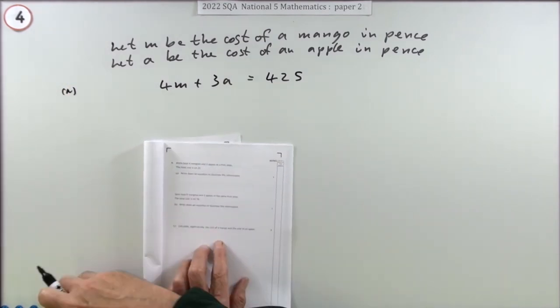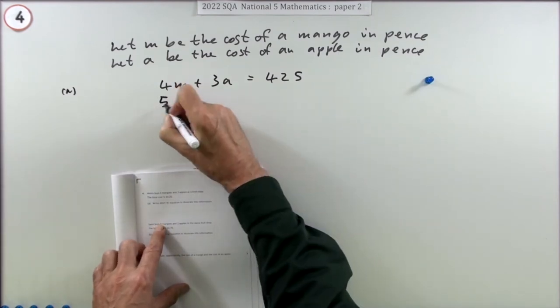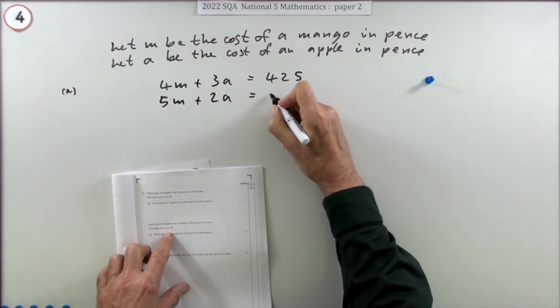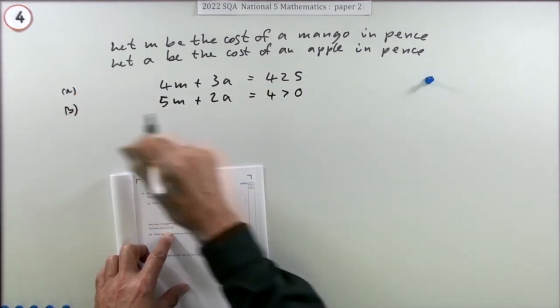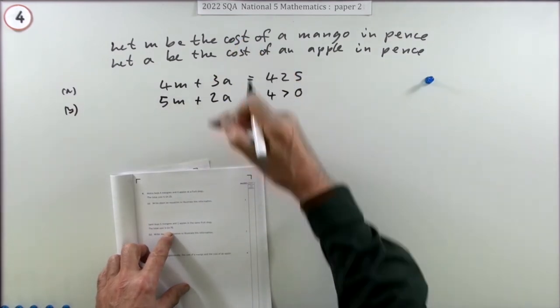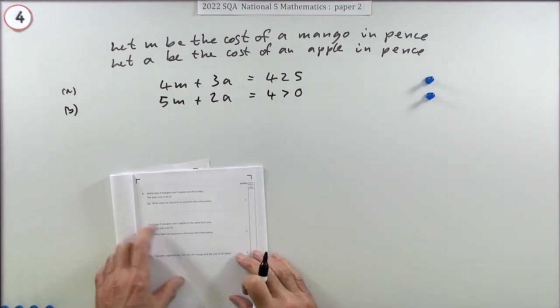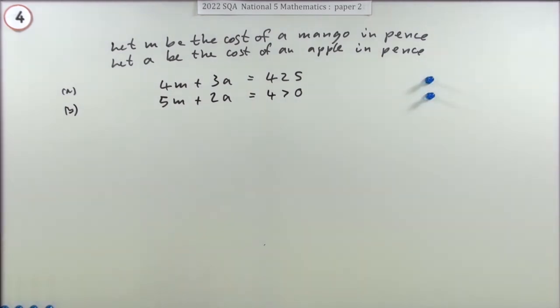The next bit of information: five mangoes and two apples comes to £4.70, that's 470. That was actually part b, but you really want them together. You want all this to flow together. That is a mark.